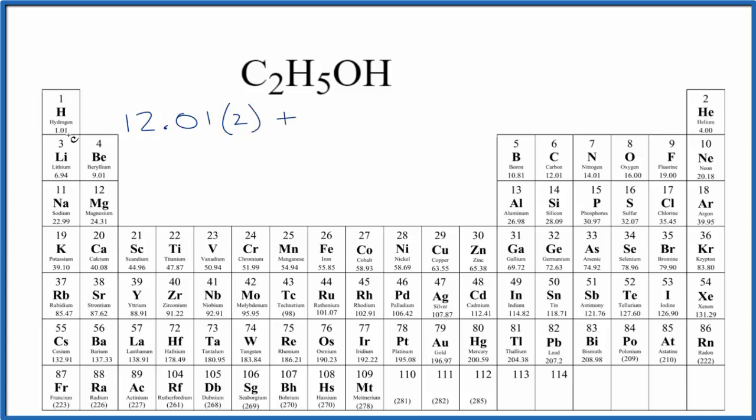For hydrogen, hydrogen is 1.01 grams per mole. We have five hydrogens plus this one hydrogen here, so we have a total of six hydrogen atoms. We're going to multiply that by six.